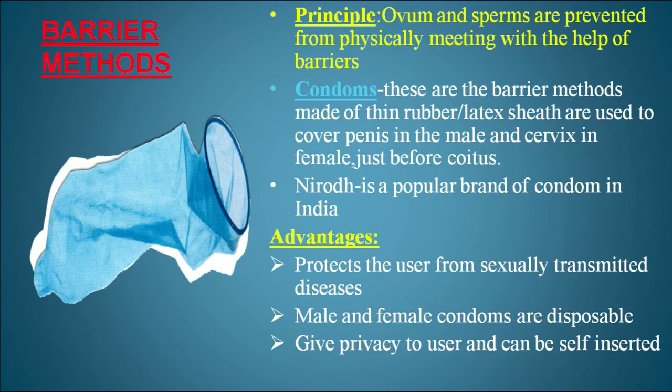Lactational amenorrhea is based on the fact that ovulation and the menstrual cycle do not occur during the period of intense lactation. However, it is effective only up to a certain period.